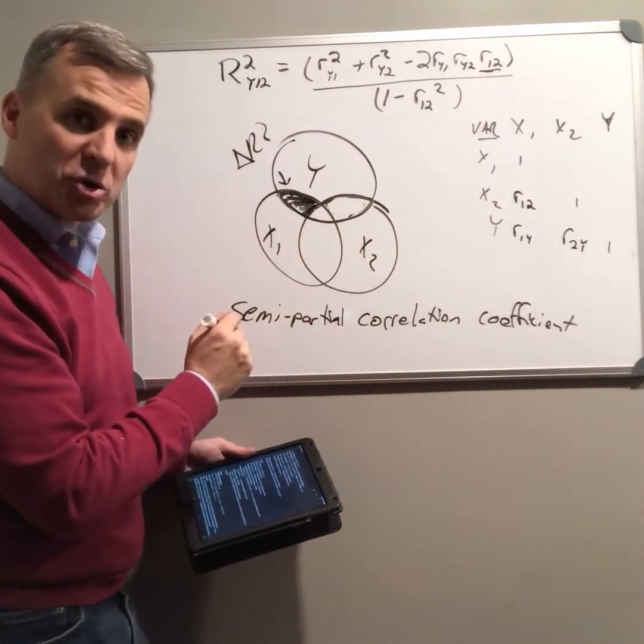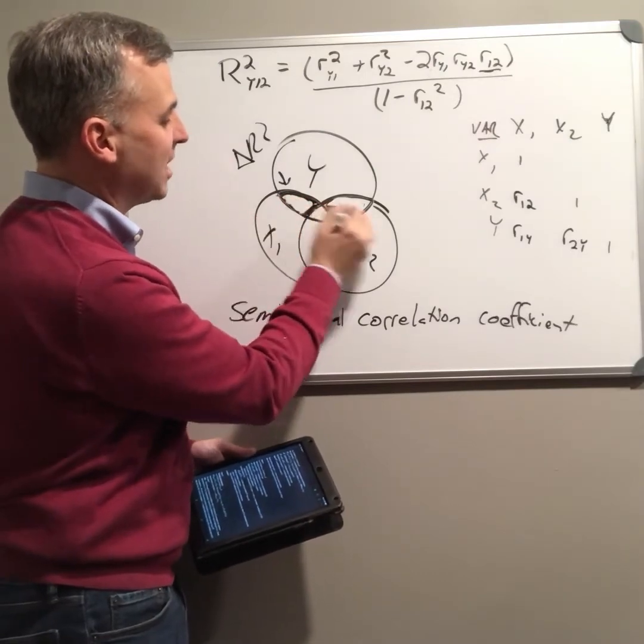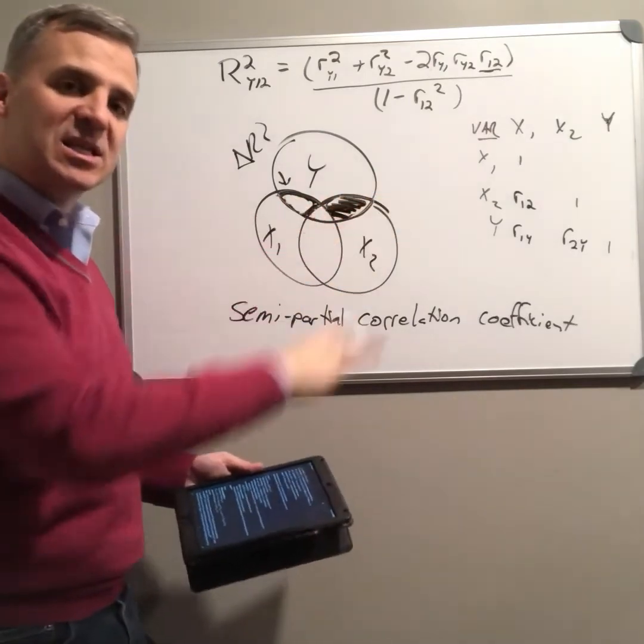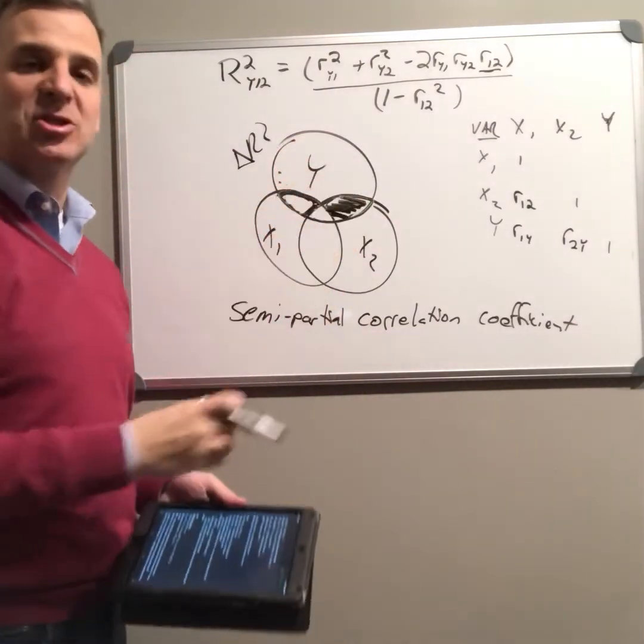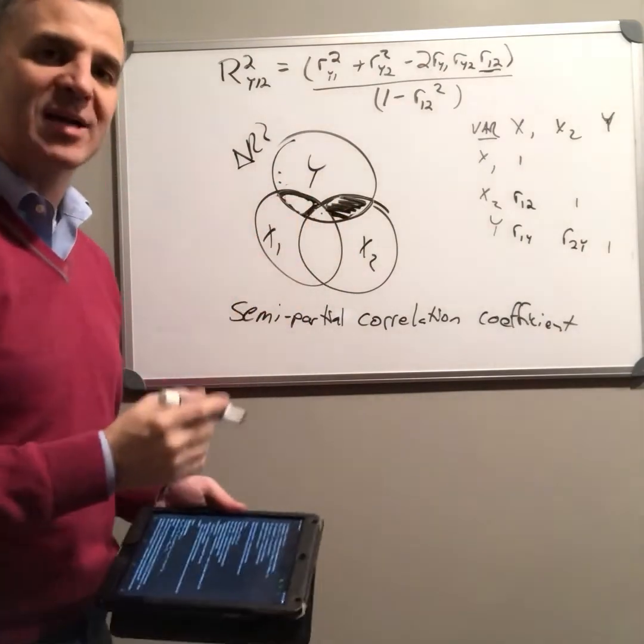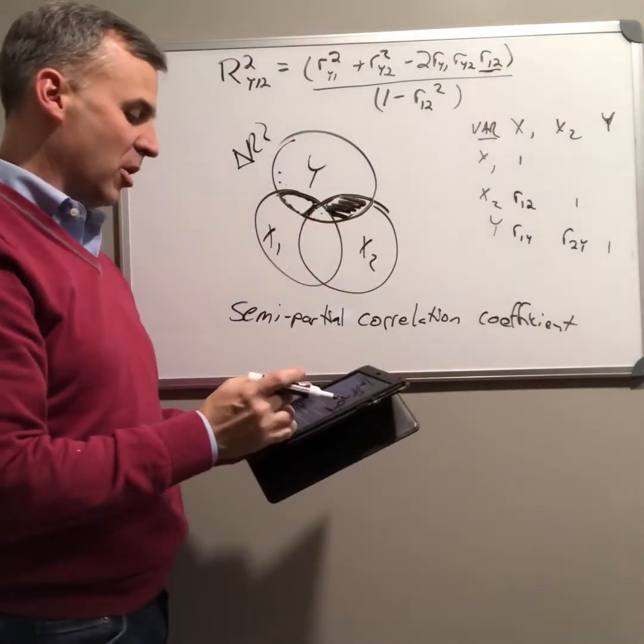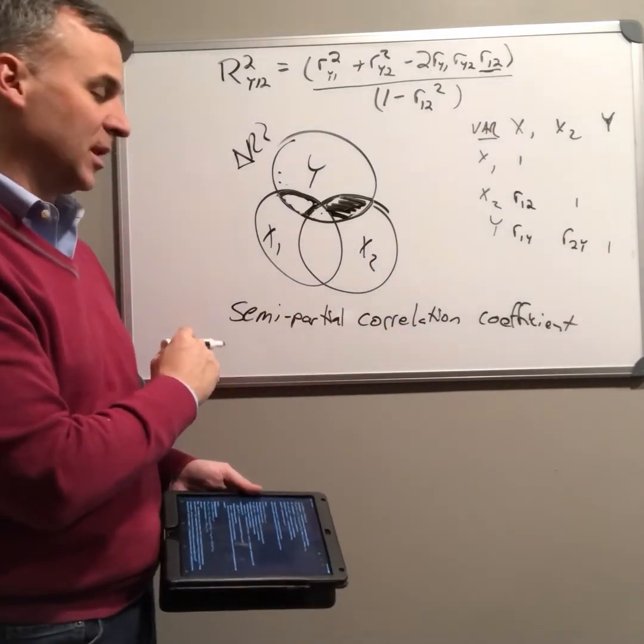If we wanted to do the semi-partial correlation coefficient for x2, that would be this area over here. This is the additional variance in y that's explained by adding x2 to the equation. It didn't add this part. This part was already there explained by x1. It's this additional part. That's the semi-partial correlation coefficient.